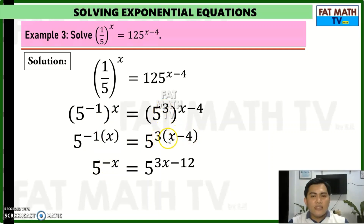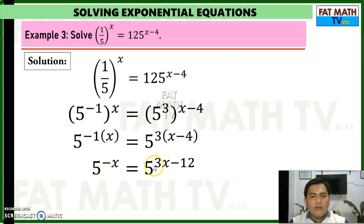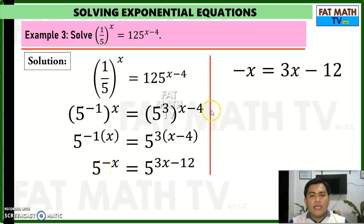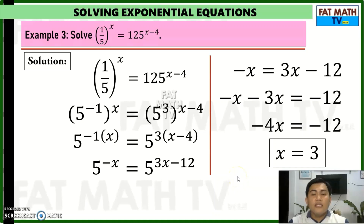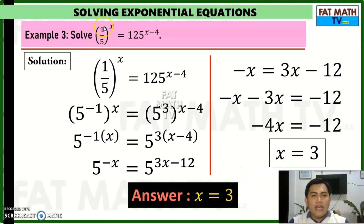On the right, 3 times (x minus 4) is 3x minus 12 — don't forget to distribute the 3. Equal exponential expressions with the same base give equal exponents, so negative x equals 3x minus 12. Adding negative 3x to both sides gives negative 4x equals negative 12, and dividing both sides by negative 4 gives x equals 3. So x equals 3 is the solution.